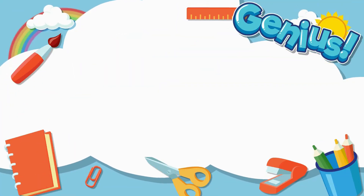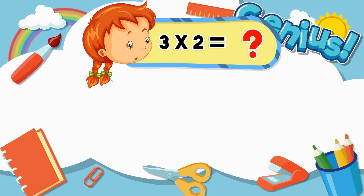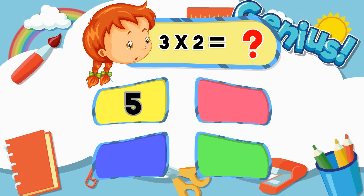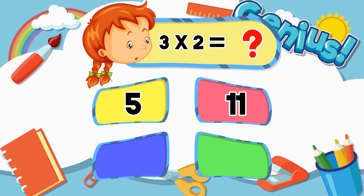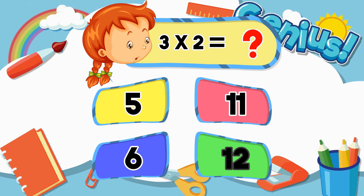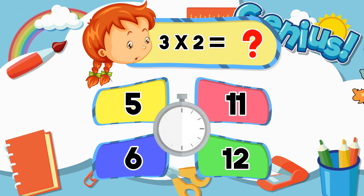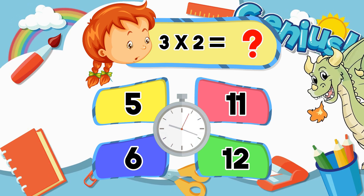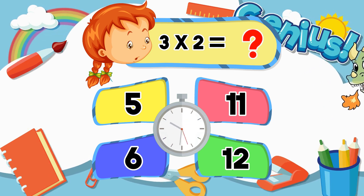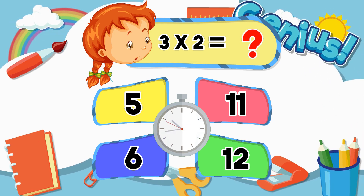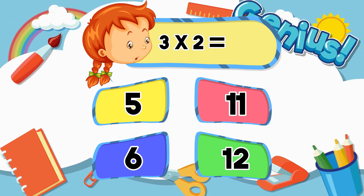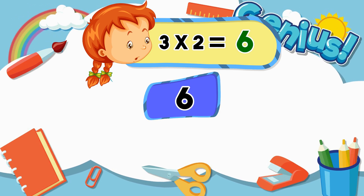What is 3 times 2? 2, 5, 5, 11, 6, 12. [Answer:] 6.